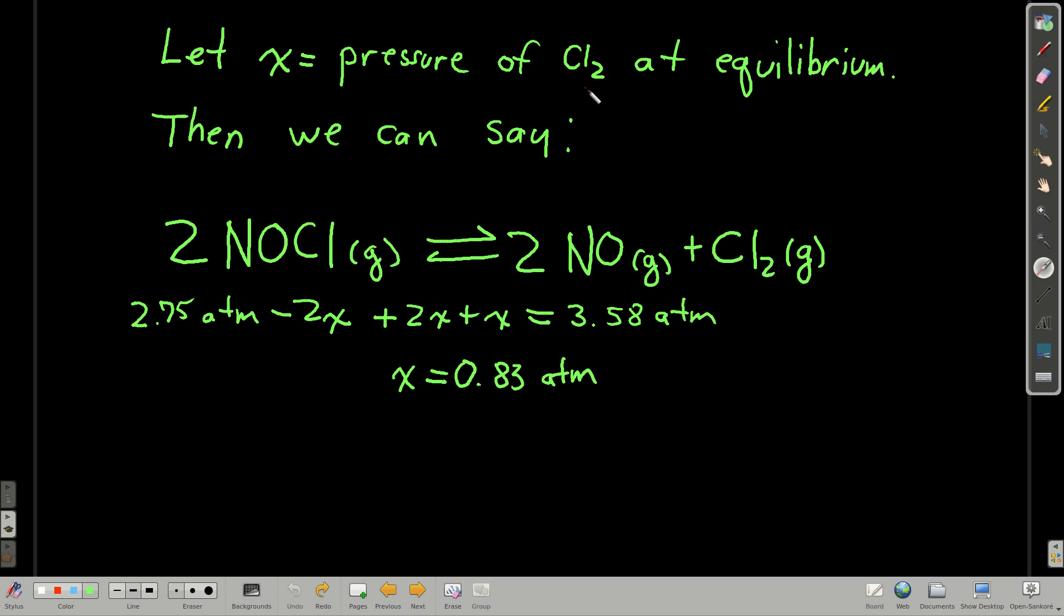So we know we started with 2.75 atmospheres of nitrosyl chloride and no nitrogen monoxide or chlorine. And then at the end, we have a total of 3.58 atmospheres. So what we can say is that we started with 2.75 atmospheres of nitrosyl chloride. And if we let X be how much chlorine is produced, the pressure of chlorine that is produced. Because two nitrosyl chlorides decomposed for every one chlorine molecule that's made, we can say that the pressure at equilibrium of nitrosyl chloride is just 2.75 minus 2 times X. And then the pressure of nitrogen monoxide is going to be 2 times X, and the pressure of chlorine is X.